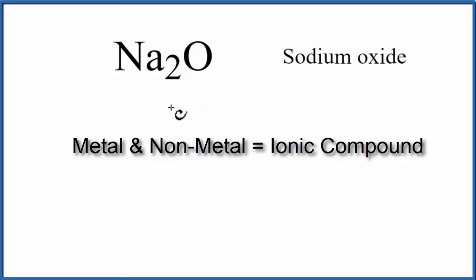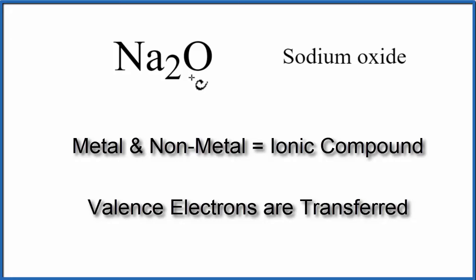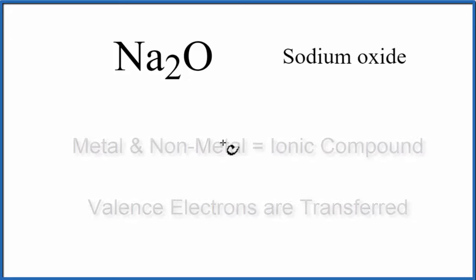In ionic compounds, valence electrons are transferred from the metal to the non-metal, and that makes the ionic bond.